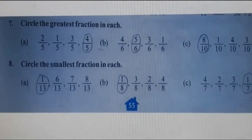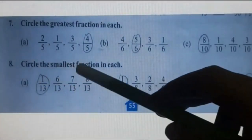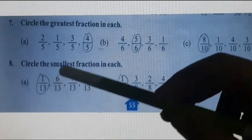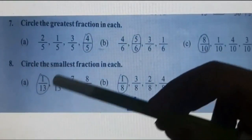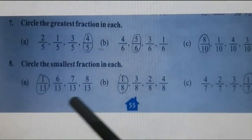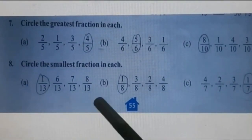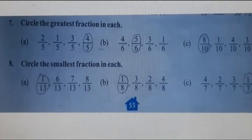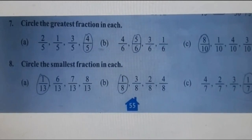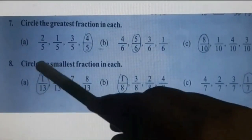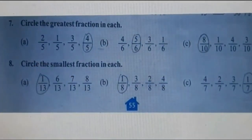Question number 8: circle the smallest fraction in each. Part A: 1 upon 13, 6 upon 13, 7 upon 13, 8 upon 13. These are like fractions — denominators are the same — so we check the numerators. The fraction with the smaller numerator is the smallest. Numerators are 1, 6, 7, 8; the smallest is 1. So the smallest fraction is 1 upon 13.